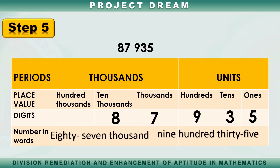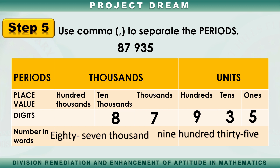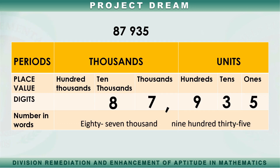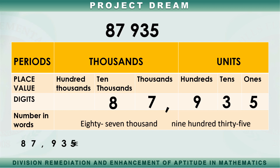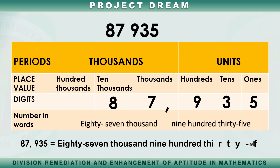Step 5: Use a comma to separate the periods. In writing numbers, we separate them using a comma. We put the comma after the thousands. But in writing words, we do not use the comma. So the number 87,935 is written as eighty-seven thousand, nine hundred thirty-five.